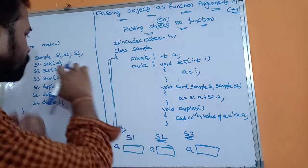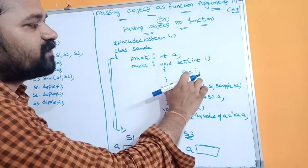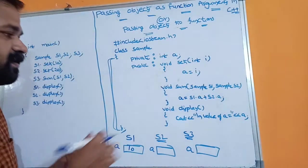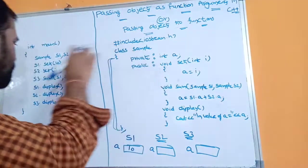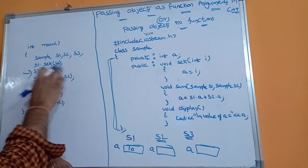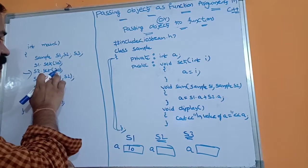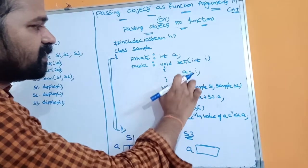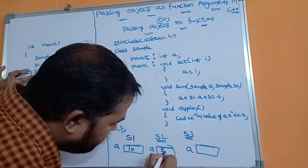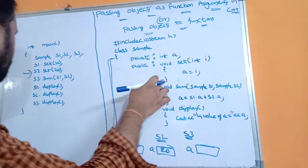Next, s1.set(10) is called — control goes to the set function, the value 10 is stored in i, and so a becomes 10 in s1's object. Then s2.set(20) is called — control goes to the set function, 20 is passed to i, and a becomes 20 in s2's object. Once each function definition is over, control returns to main.